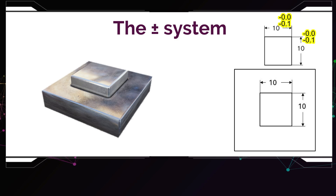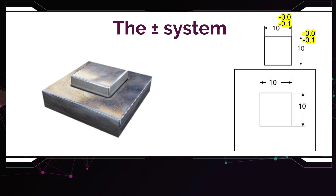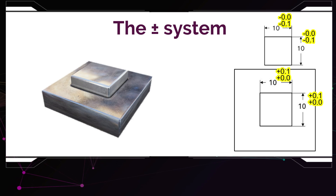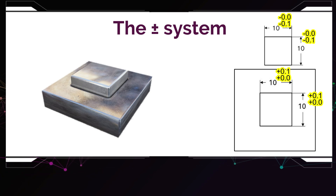This way, you can be sure that the box will always be smaller than the hole, and you do the exact opposite on the hole side, by giving it plus tolerances, so 10 plus 0.1. You guarantee this way that every box will fit in every hole manufactured. That's the plus-minus system.